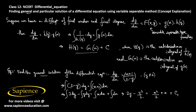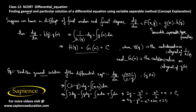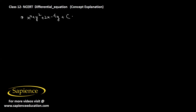Multiplying both sides by 2, we get 4y minus y² equals x² plus 2x plus 2c₁. Taking 2c₁ as a new constant c, this general solution can also be written as x² + y² + 2x − 4y + c = 0. This is the required general solution, which represents a family of circles.